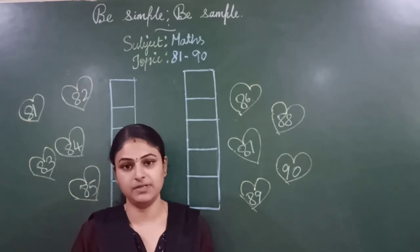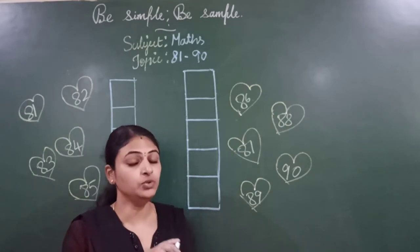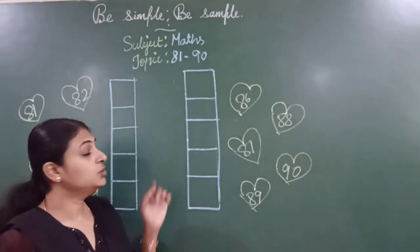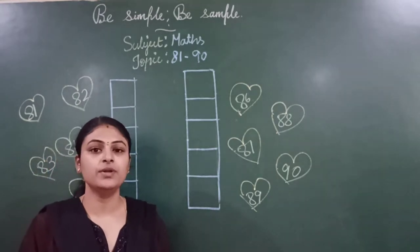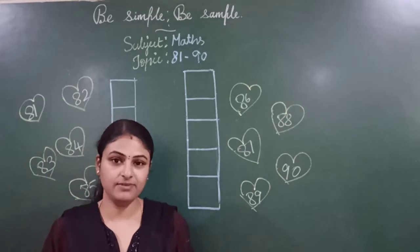Yes, no children? In previous class, until now we have learnt how to write number 1 to 80. Yes, no? Today I am going to teach you 81 to 90. Shall we start children?